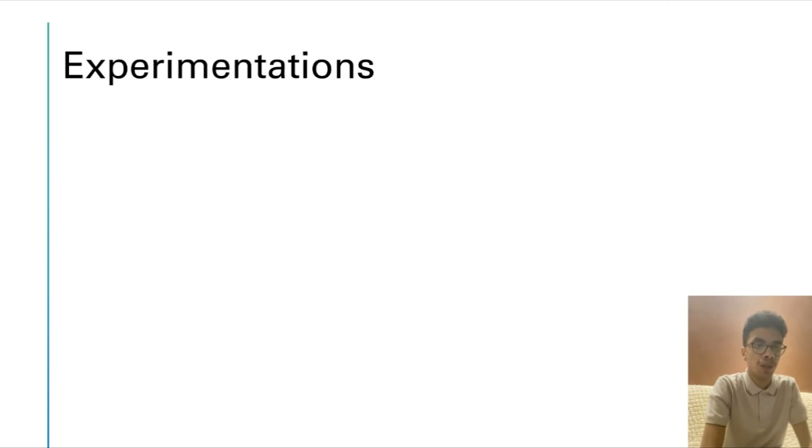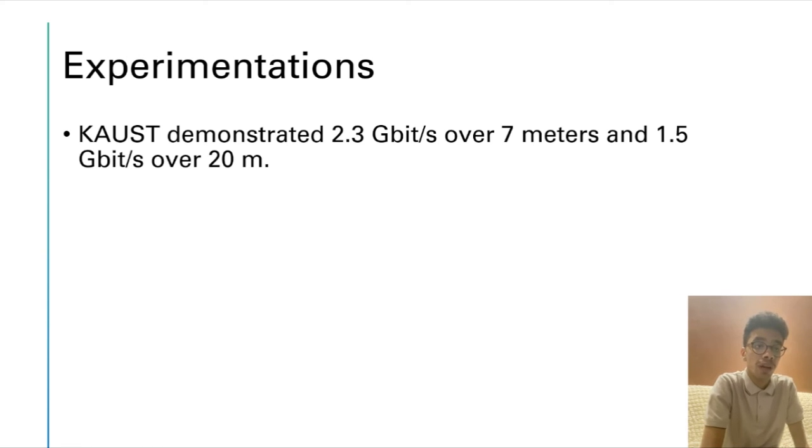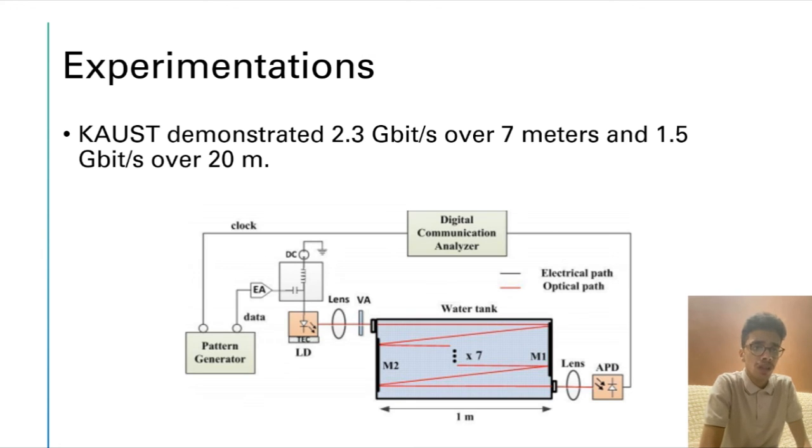My name is Amr Soufiani. Today I will talk about the experimentation and future parts of this technology. As you can see it's a new technology and we might not see this technology being deployed in the next 10 years. But there are experiments being conducted by King Abdullah University of Science and Technology. They managed to have 2.3 Gbps over transmission distance of 7 meters and also 1.5 Gbps over transmission distance of 20 meters. And this figure shows how the experiments being done.